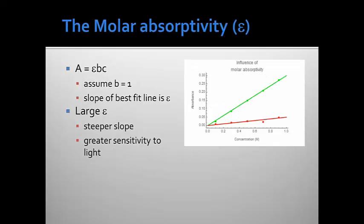Now let's focus on the slope of this line just a little bit more. We notice that if the path length is constant, then the slope of this line is equal to the molar absorptivity. If the slope is large, then that indicates that the molar absorptivity is also large. A large molar absorptivity indicates that a sample has high sensitivity to light at that wavelength.